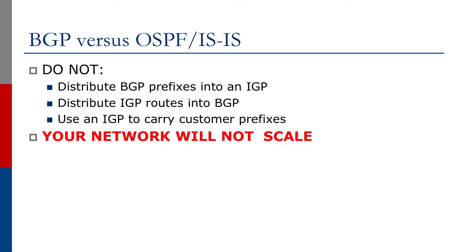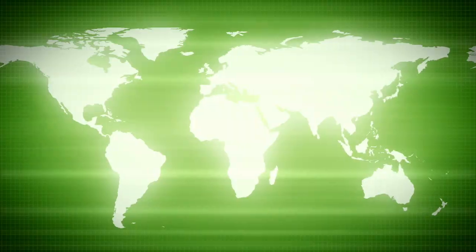If you want your network to scale properly, you should not do the following: you should not distribute BGP prefixes into an IGP, you should not distribute IGP routes into BGP, and you should not use an IGP to carry customer prefixes.